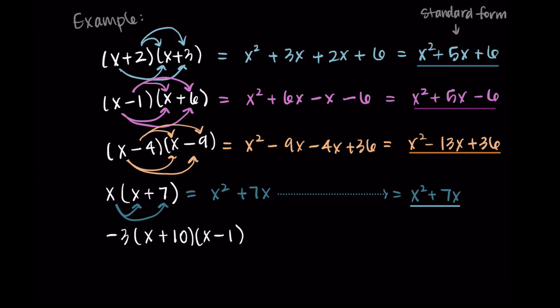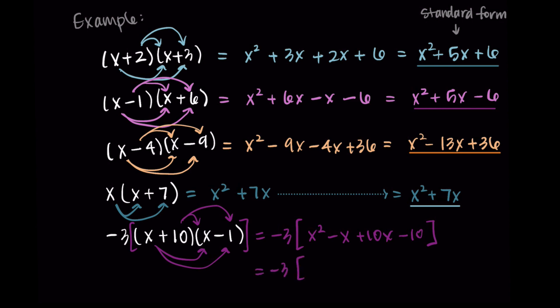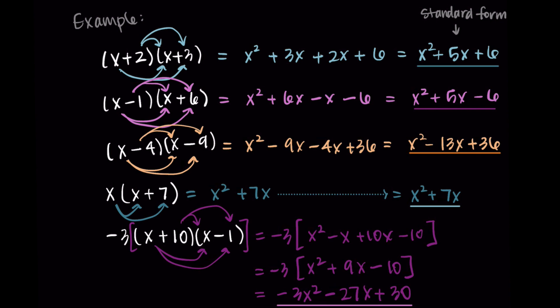Lastly, negative 3 times x plus 10 times x minus 1 has a leading coefficient of negative 3. We multiply the two binomials first: x plus 10 times x minus 1 gives x squared minus x plus 10x minus 10. Simplifying gives x squared plus 9x minus 10. Then distributing the negative 3 gives negative 3x squared minus 27x plus 30. So factored forms can all eventually be written in standard form — this is just to convince you that factored form is another way to write a quadratic function.